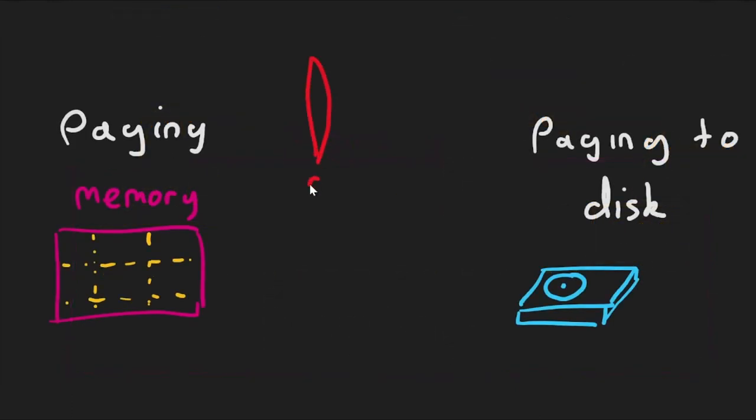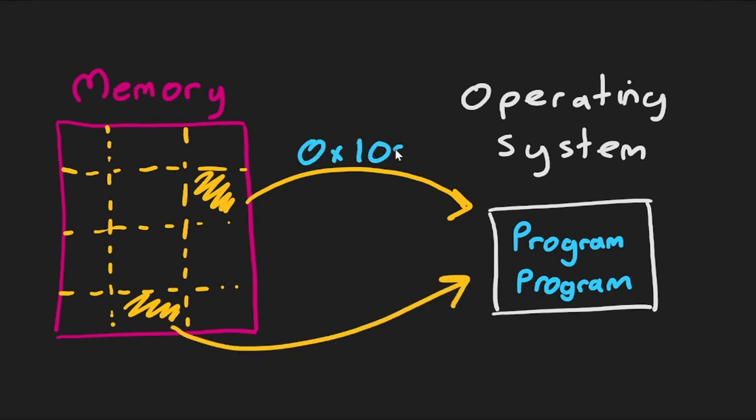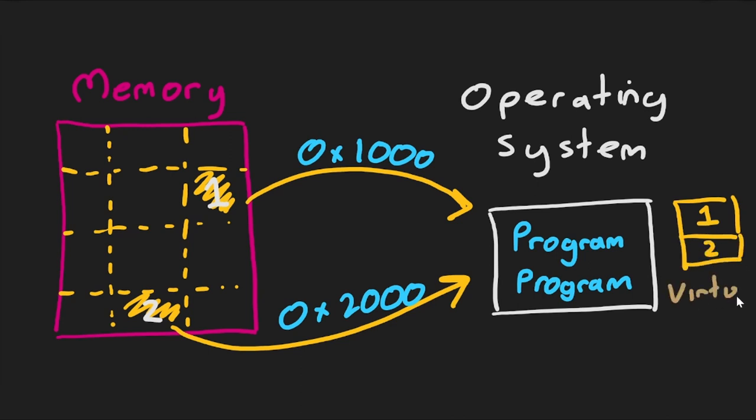A common confusion in the computing industry is that paging means paging to disk. They are not the same. Paging breaks down physical memory into precisely sized chunks and gives those chunks to the underlying operating system as virtual addresses or virtual address space. It has nothing to do with touching the disk.